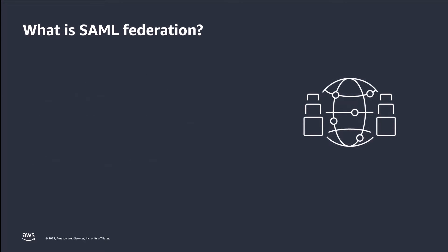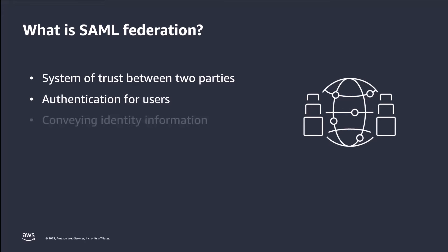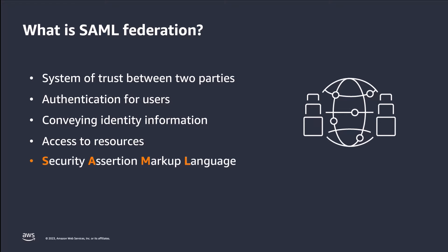Before we walk through configuring a SAML identity provider with Amazon Cognito, let's first understand what SAML Federation is and the benefits of it. At a high level, identity federation is a system of trust established between two parties for the purpose of authenticating users and conveying information needed to authorize their access to resources. SAML stands for Security Assertion Markup Language, which is an XML-based communication protocol between service providers and identity providers. It allows different organizations to securely share identity and authentication information across corporate boundaries. For example, an identity provider is responsible for user authentication and a service provider, such as an application, controls access to resources.